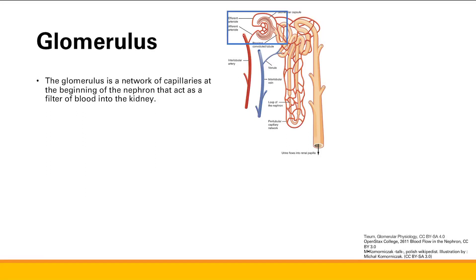Let's focus on the glomerulus. The glomerulus is a network of capillaries at the beginning of the nephron that acts as a filter of blood into the kidney. When we start with the interlobular arteries, those are going to feed into the glomerular capillaries at the beginning of the nephron.